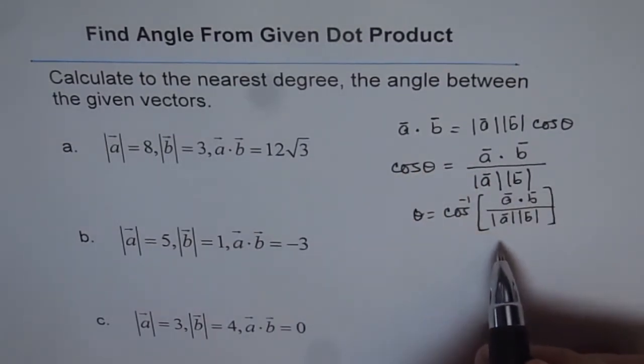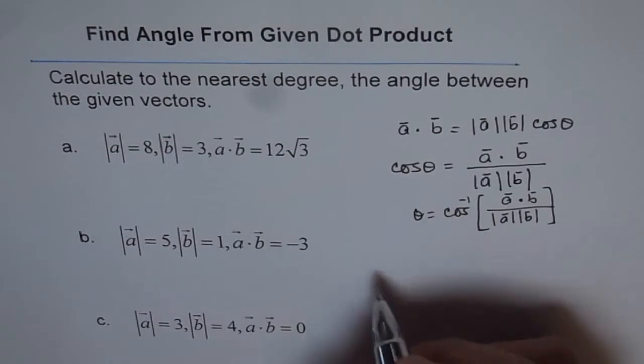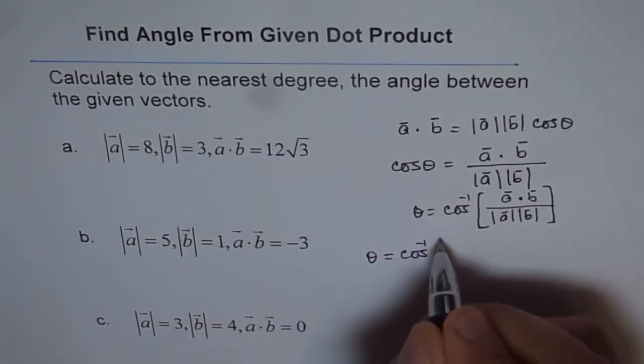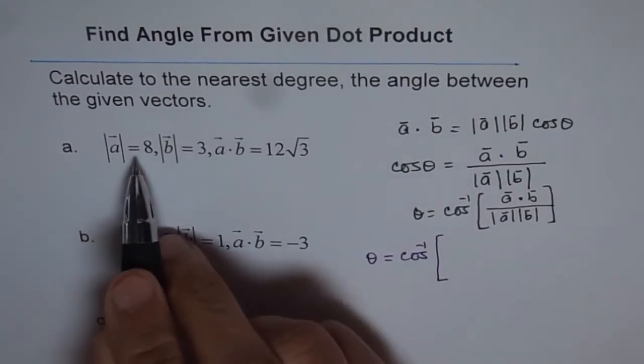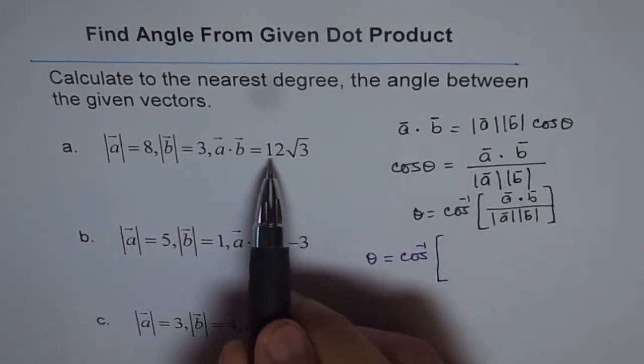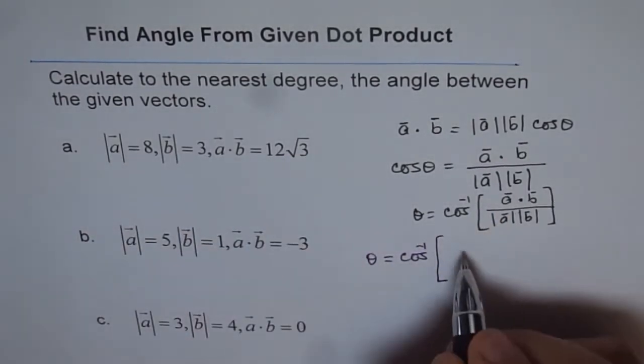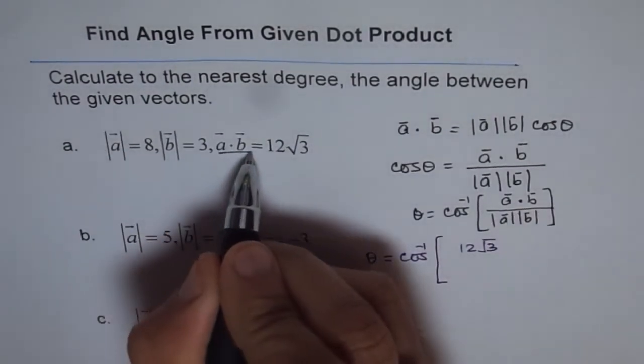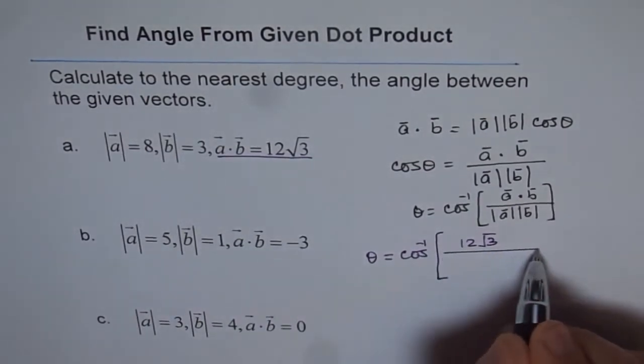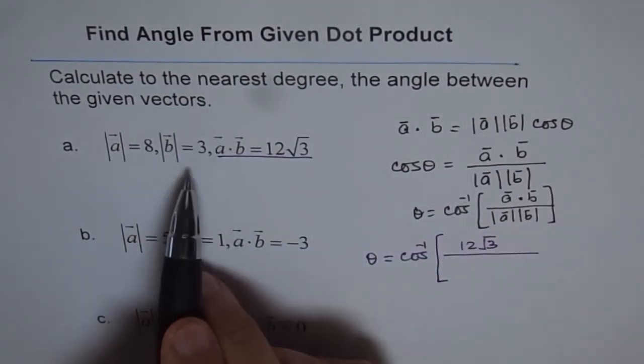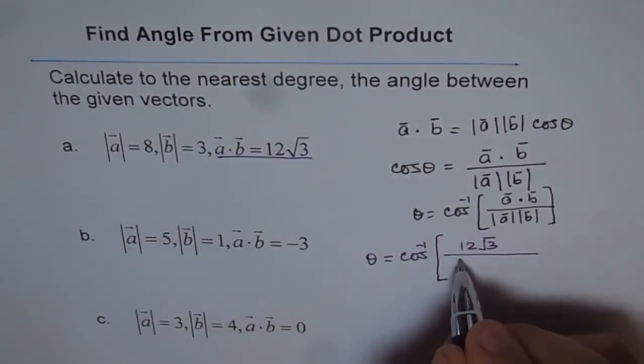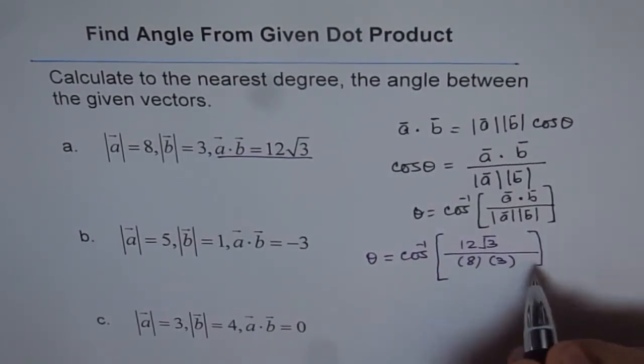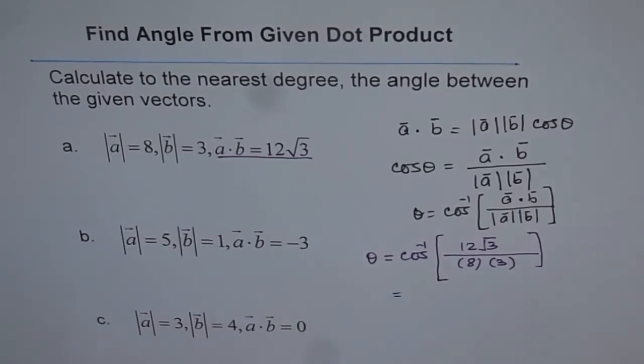So that is the derivation of the formula. You can always apply this formula and you get theta equals cos inverse of dot product, which is known as 12√3. So we'll write 12√3, that is the dot product of a and b given to us, divided by magnitude of a, 8 times magnitude of b, which is 3. So 8 times 3. You can plug this value in the calculator and get the answer.